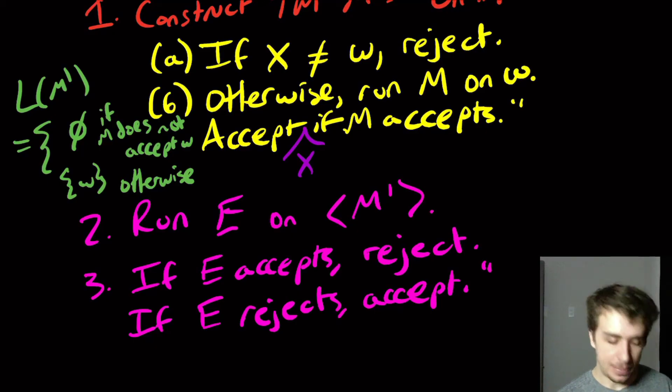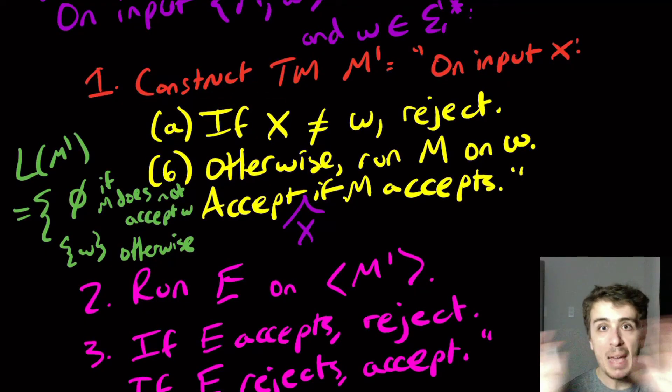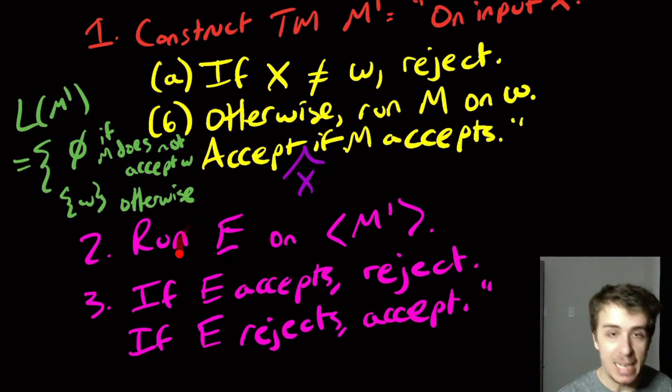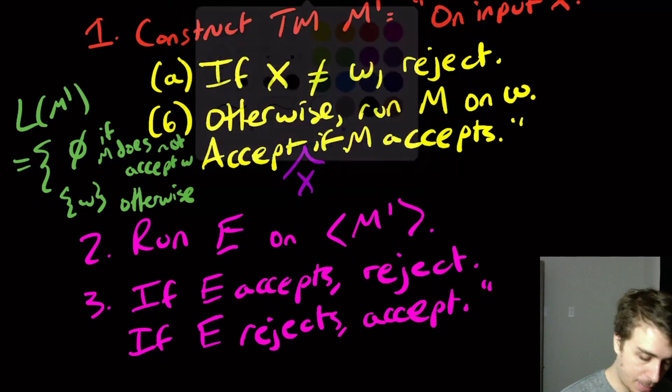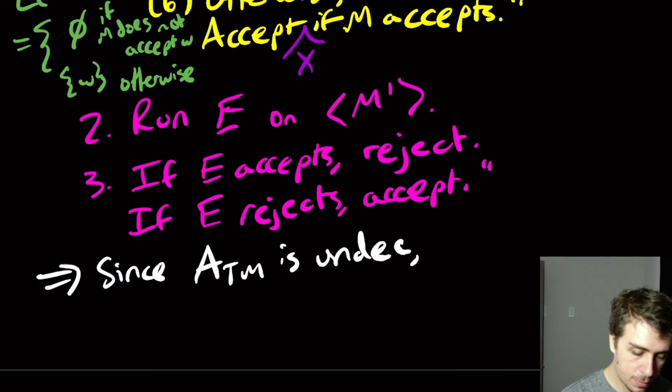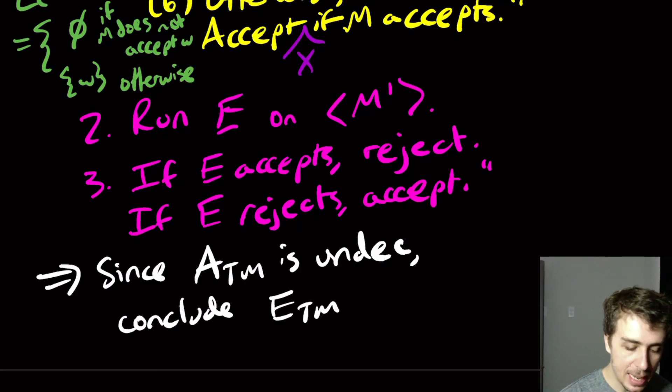And so this tells us that because all of this runs in a finite amount of time, this first step is just making the machine that's not running it. And since all of this runs in a finite amount of time by assumption, we're assuming E runs in a finite amount of time. Therefore, that tells us that ATM is decidable if ETM is, but ATM is not decidable. So there's no way that ETM can be. So what we can conclude from this is since ATM is undecidable, we can conclude that ETM is undecidable.